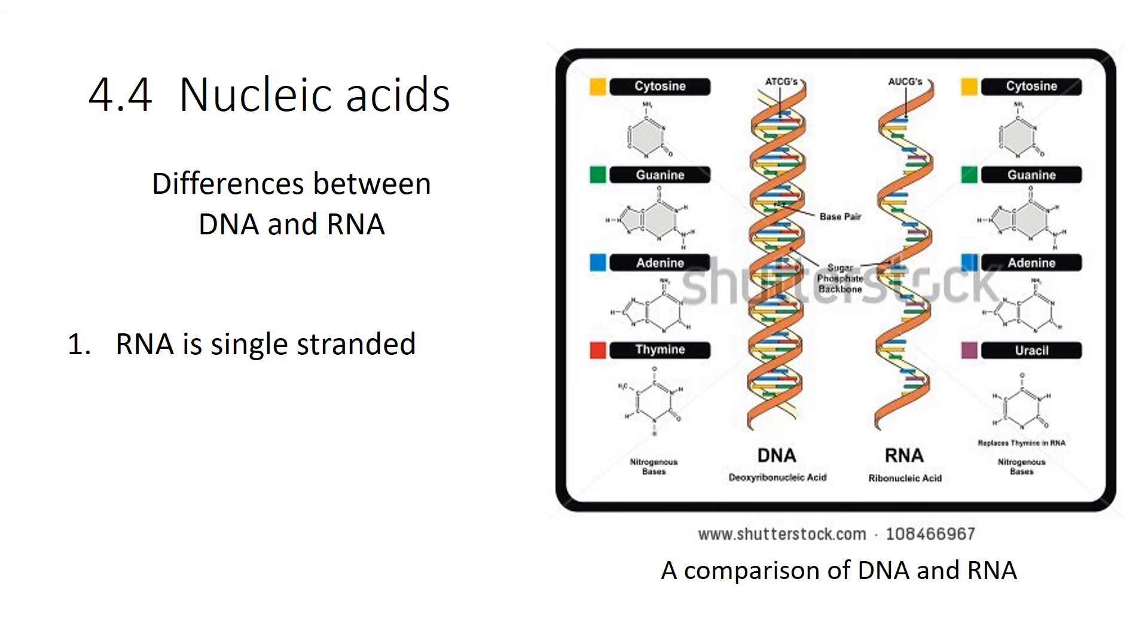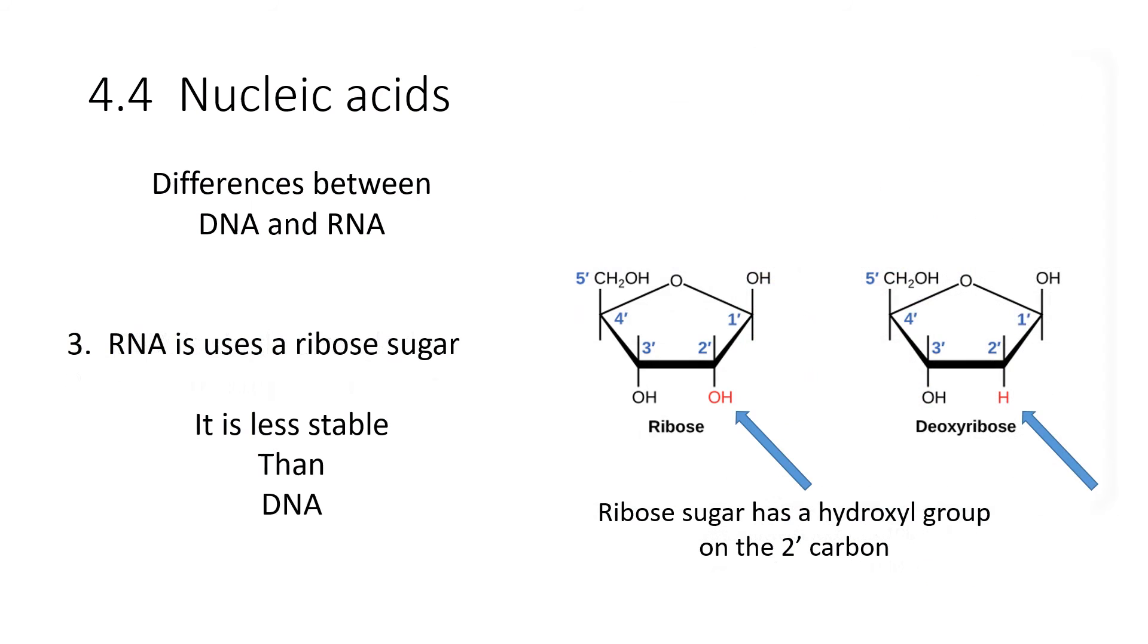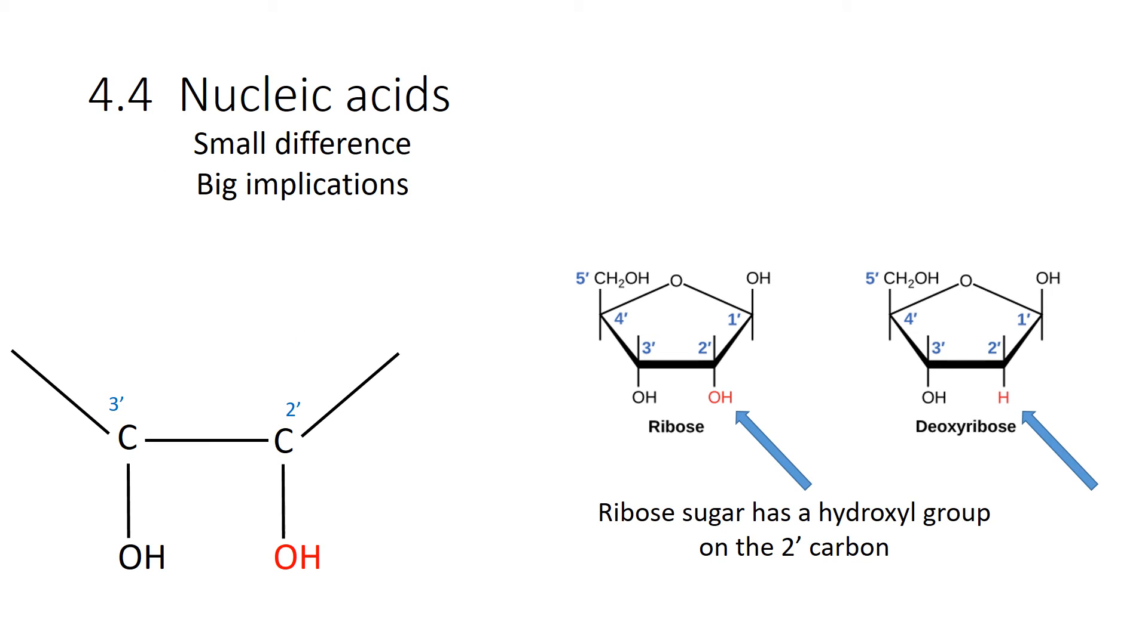Let's go into RNA. RNA is a single-stranded molecule. Now it can fold in on itself, but it's still single-stranded. It uses the nitrogenous base uracil, which is a little bit different than thymine. And RNA uses what is called a ribose sugar. Now if you notice, a ribose sugar has the hydroxyl group on the 2 prime end. That makes it less stable than DNA.